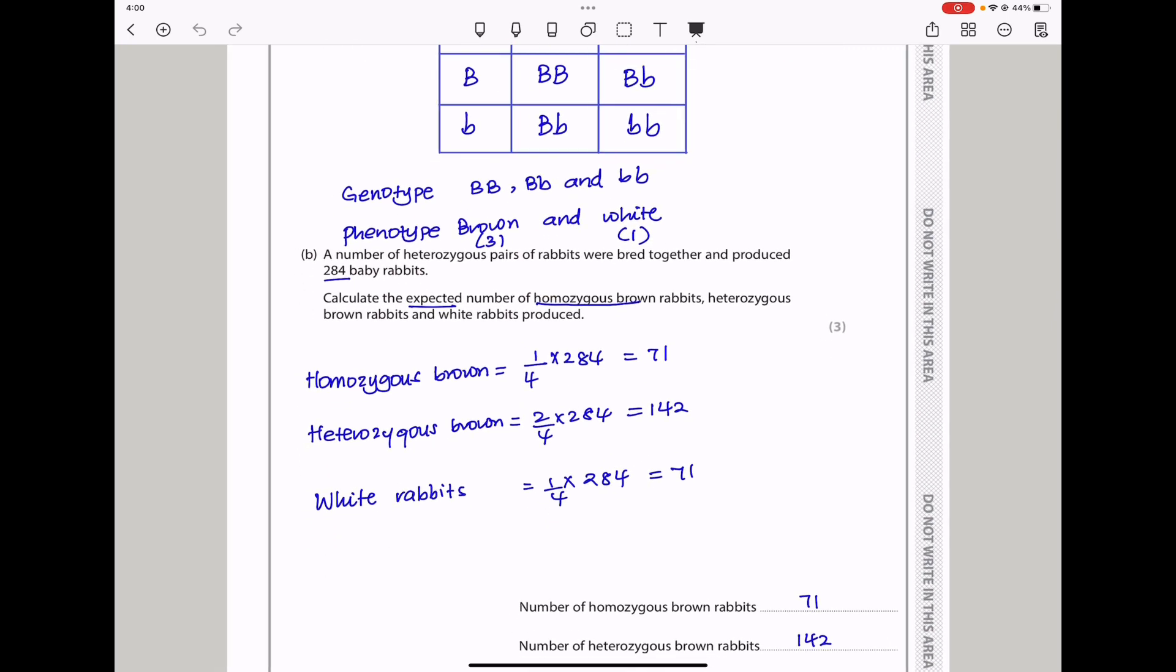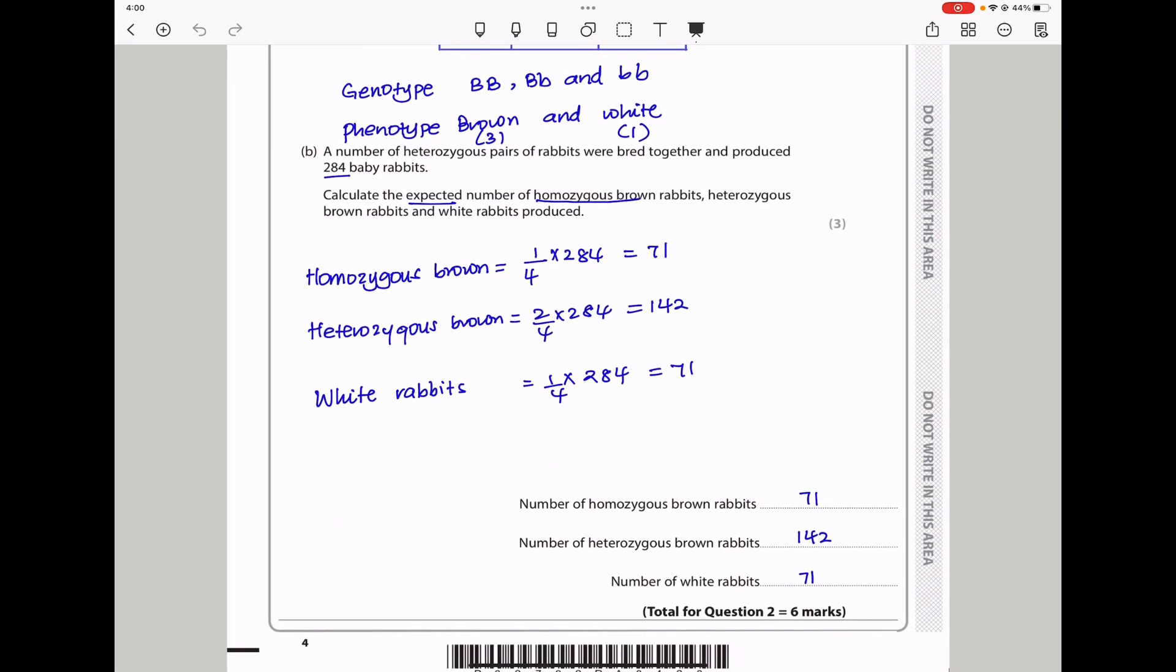So those will be the numbers in total. We're going to have 71 for homozygous brown, heterozygous will be 142, and the number of whites are going to be 71. This brings us to the end of question two.